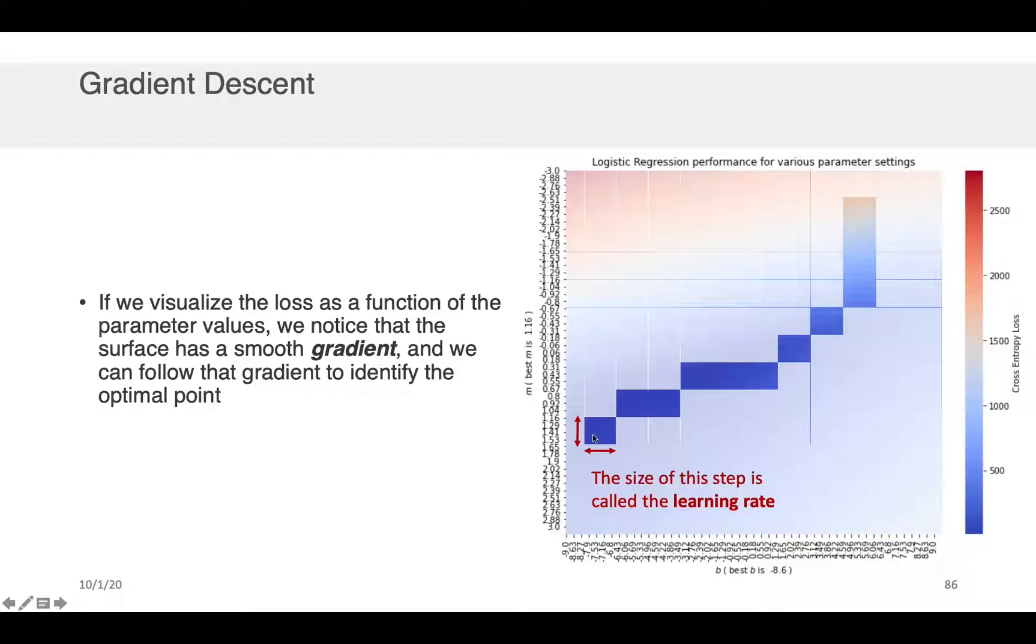The size of the block that you choose when you want to jump is called the learning rate in the context of gradient descent, because it sort of dictates how quickly you move through this space or the rate at which you learn the optimal value of the parameters.